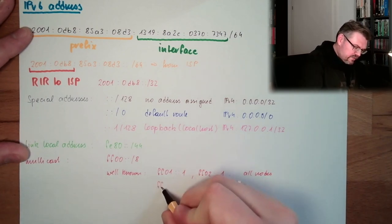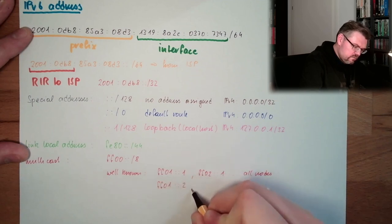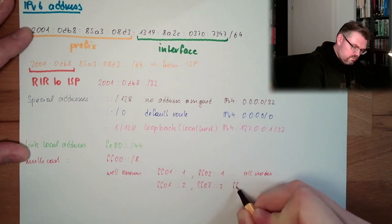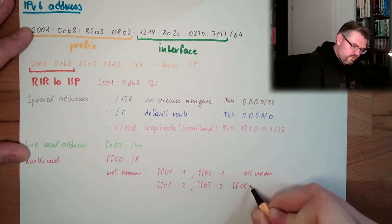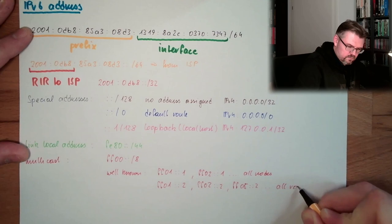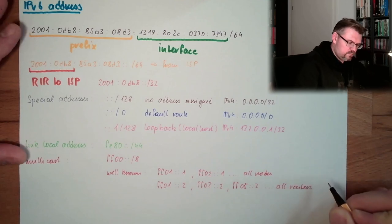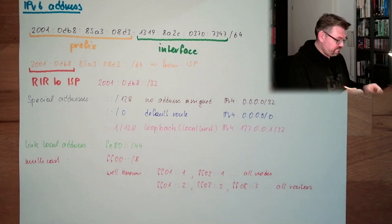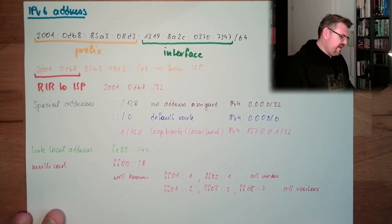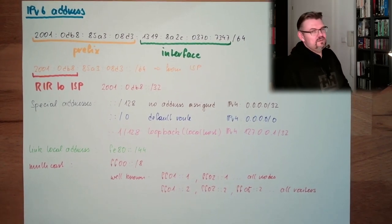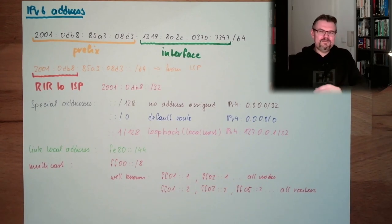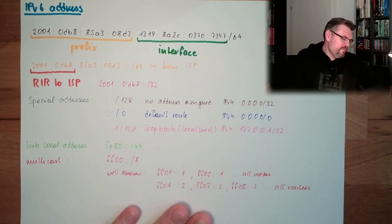And then we have the address ending in ::5, which means all routers. This is important when we want to assign an internet address.